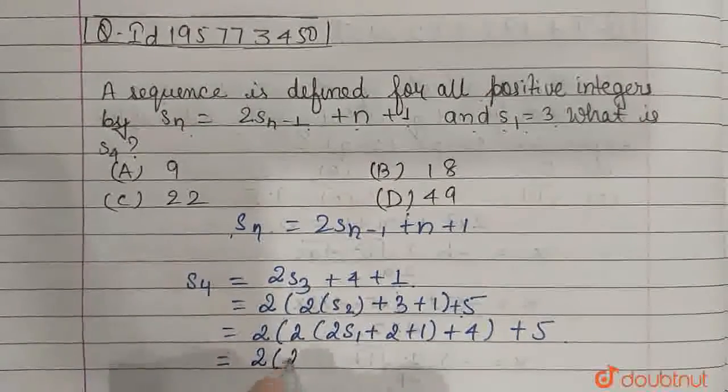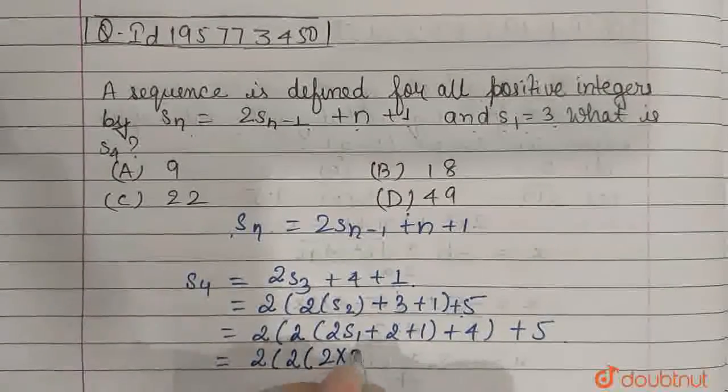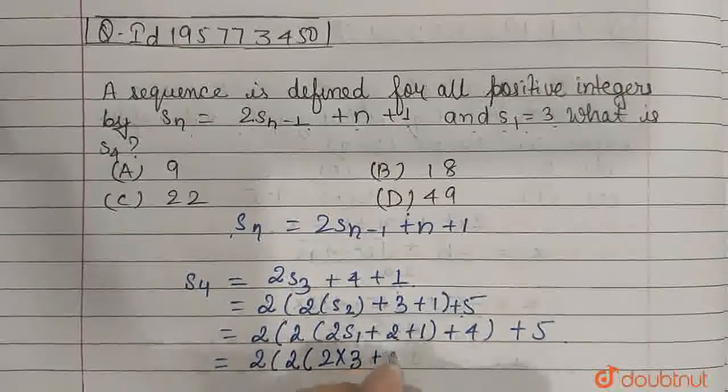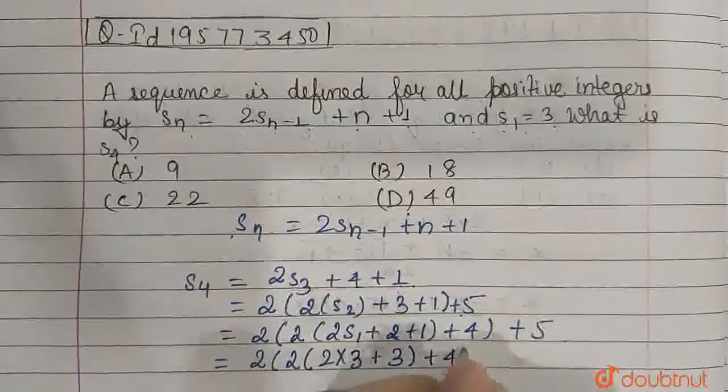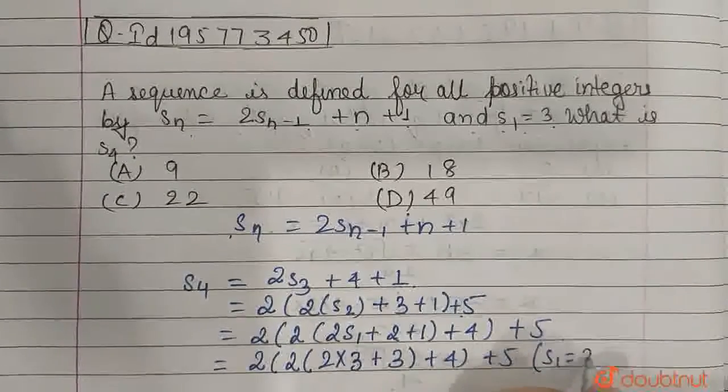And we have been given that s1 is equal to 3. So 2 times 3 plus 2, plus 2 plus 1 is 3, plus 4 plus 5, since s1 is given as 3.